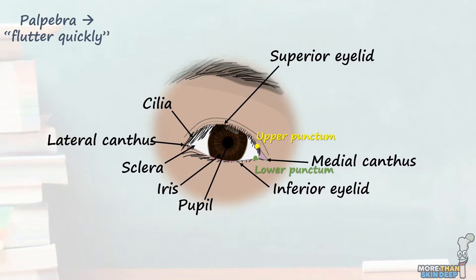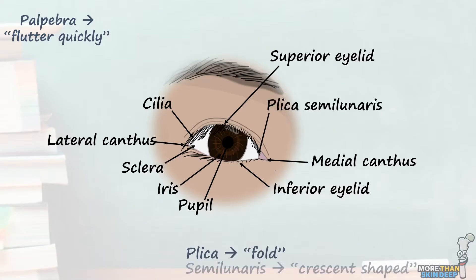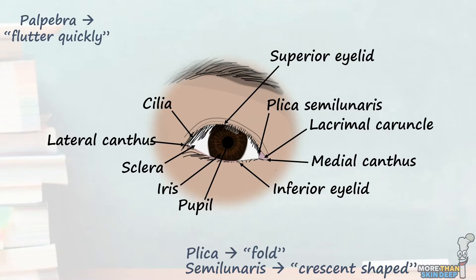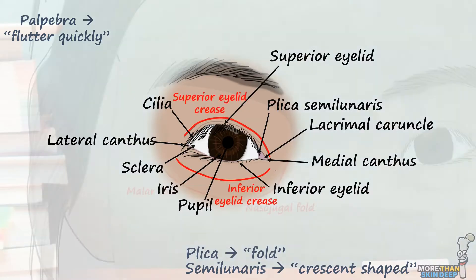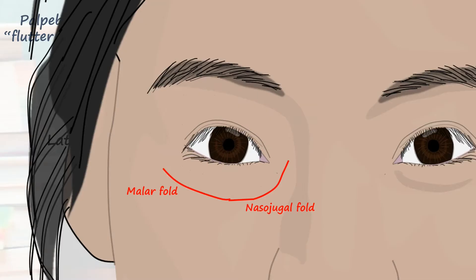Lastly, this fleshy pink bit in your medial eye is known as the plica semilunaris. The name means crescent-shaped fold in Latin, and is thought to be a vestigial remnant of the nictitating membrane, or third eyelid, that is seen in animals such as birds, reptiles, and amphibians. In the most medial part of the eye is the lacrimal caruncle, which consists of accessory lacrimal tissue. Lastly, there are several recognisable creases around the eye known as the superior eyelid crease, the inferior eyelid crease, the malar fold, and the nasojugal fold.